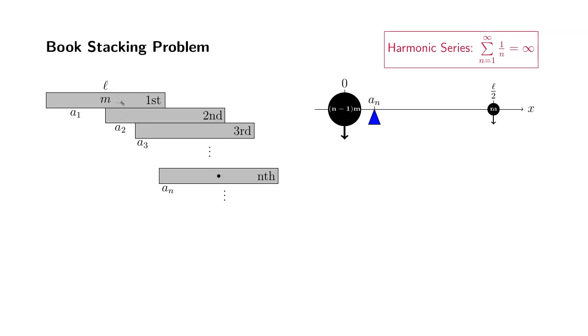We're going to start with the first book, and we're going to try to push it to the left as much as possible. So theoretically, we can place the center of mass of the first book right at the edge of the second book. So that will determine A1. So that's going to be halfway through. So A1 is going to be L over 2.